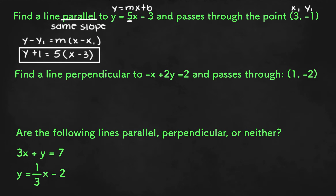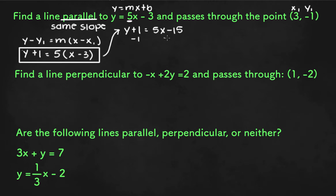If we were asked to find the slope-intercept form of the line parallel to y equals 5x minus 3 passing through the point (3, -1), we could solve that in two different ways. We could start with the point-slope form and then convert it into slope-intercept form. To do that, we distribute the 5: y plus 1 equals 5x minus 15, then subtract 1 from both sides to get y equals 5x minus 16.